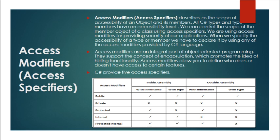When we specify the accessibility of a type or member, we have to declare it by using any of the access modifiers provided by the C-sharp language. Access modifiers are an integral part of object-oriented programming. They support the concept of encapsulation, which promotes the idea of hiding functionality, and allow you to define who does or doesn't have access to certain features.